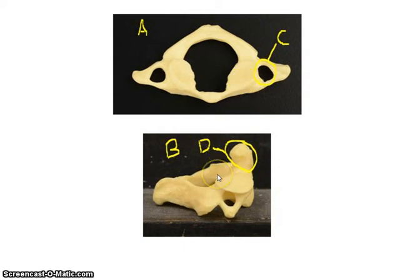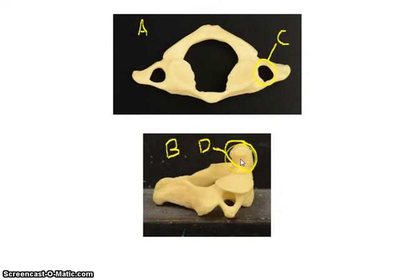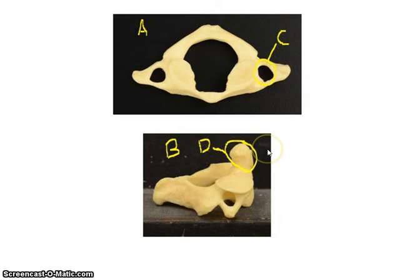The second cervical vertebra is called the axis — your head turns on this bone, something turns on an axis. The small projection that sticks up is called the dens, and you are responsible for knowing that name. To identify any of the other five cervical vertebrae besides the atlas and axis, look for the transverse foramen — that is your biggest clue that a vertebra is cervical.